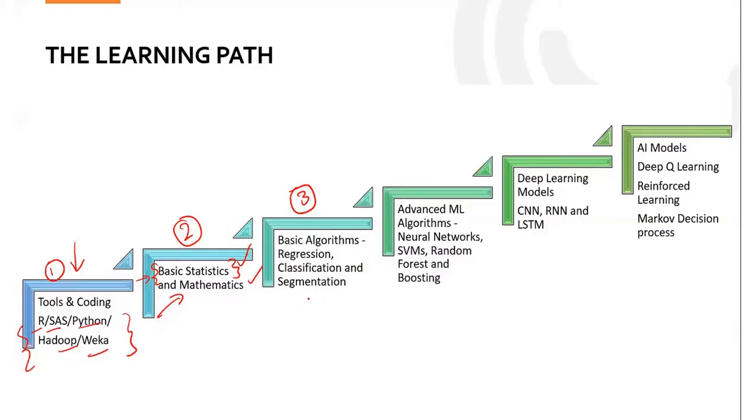The fourth step is black box methods—advanced machine learning algorithms like neural networks, SVM, random forest, boosting. Once you have a good hold on the basic algorithms, you'll be able to follow these, because they are extensions of the original algorithms. If I take a lot of decision trees and build a model combining all of them, that becomes random forest. To understand random forest, you should have good knowledge of decision trees. To understand neural networks, you need understanding of logistic regression. This is important—once you have good basics, you can always follow these black box methods.